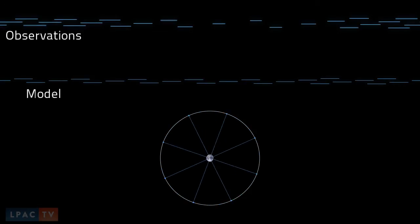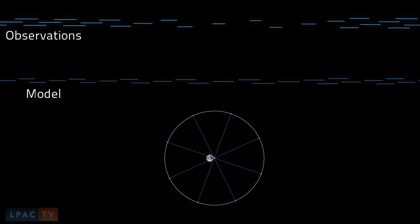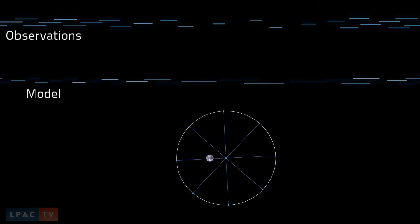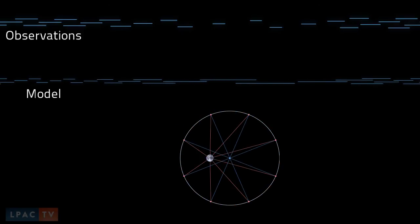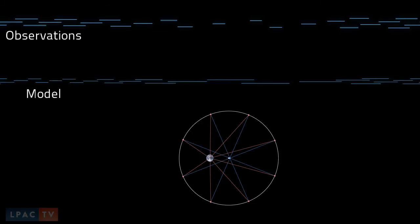Now watch what happens to the retrogressions map as we go from the off-center circle to the equant model. This looks pretty close to the observations. Let's watch the transitions again from a simple circle, a concentric, to an off-center circle, an eccentric, to the use of an equant.